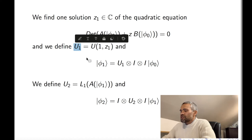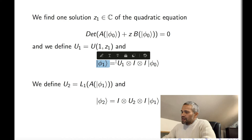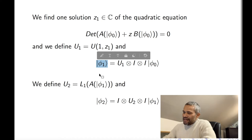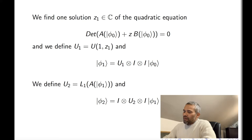With U1 we change the state into a new one, and that new state will produce two matrices A and B. We use the matrix A of this new state and compute L1 of A. L1 of A is a unitary 2-by-2 matrix — that's our matrix U2. Then we change the state again using this local gate and produce a new 3-qubit state.